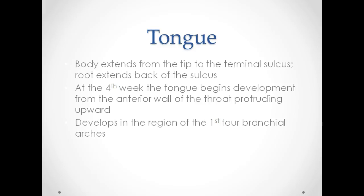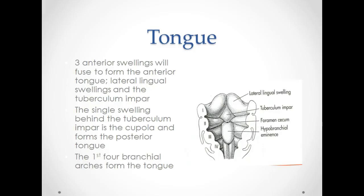At the fourth week, the tongue begins development from the anterior wall of the throat, protruding upward. It develops in the region of the first four branchial arches. Three anterior swellings — the lateral lingual swellings and the tuberculum impar — will fuse to form the anterior tongue. The single swelling behind the tuberculum impar is the cupula, and forms the posterior portion of the tongue.